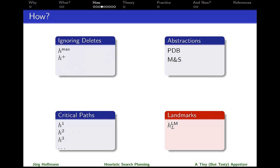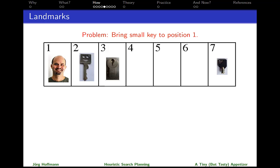That's already all I'm going to say about abstractions. Next one up, landmarks. For this one, I've designed a very simple problem that is easy to understand and illustrate. So the problem here is for me, I'm currently in position one to go over to position seven and get the small key and then carry it all the way back to position one.